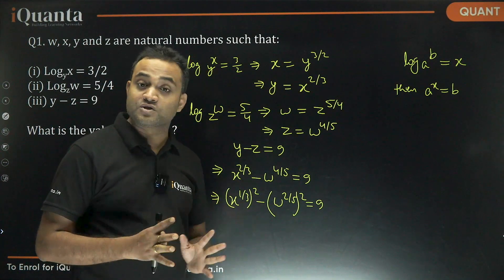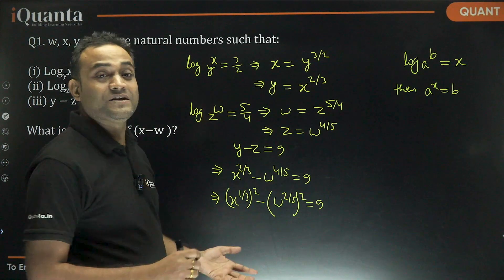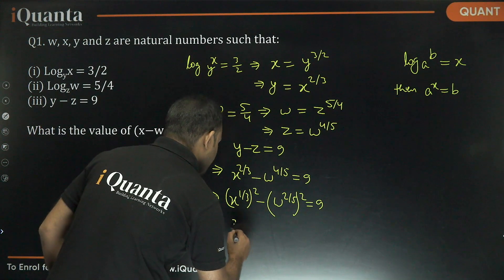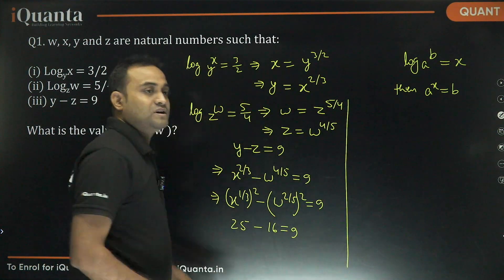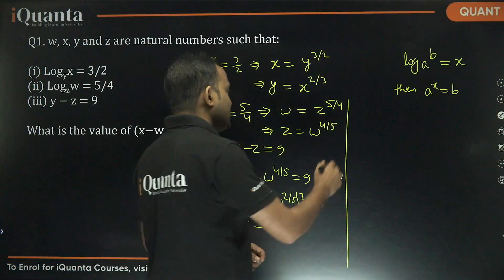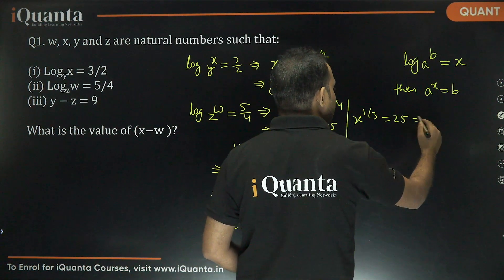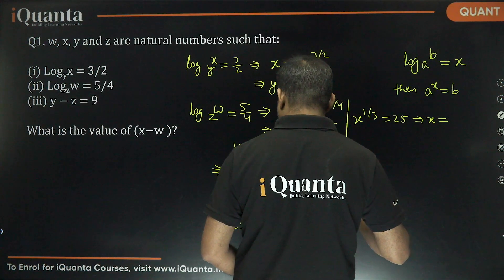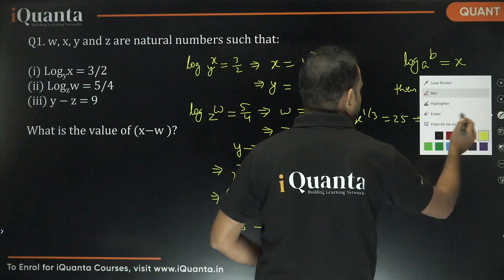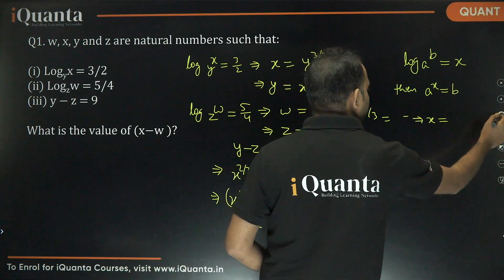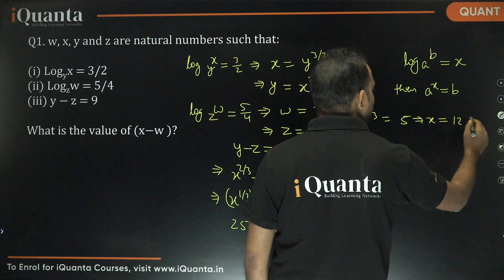We need to find two perfect squares where the difference is 9. That's nothing but 25 and 16 — 25 minus 16 equals 9, and there is no other possible combination. So X to the power 1 by 3 is equal to 5, because (X to the power 1 by 3) squared is 25. This gives us X equal to 5 cubed, or 125.